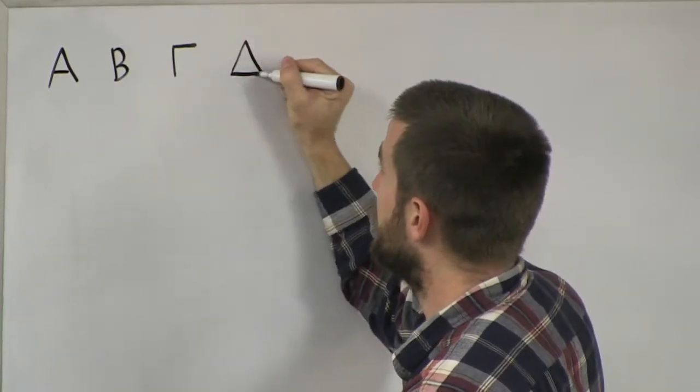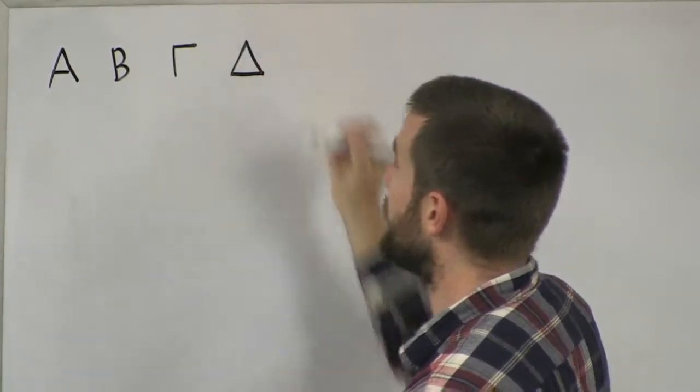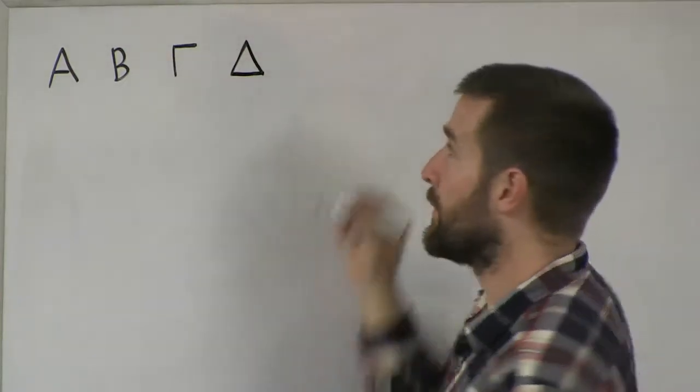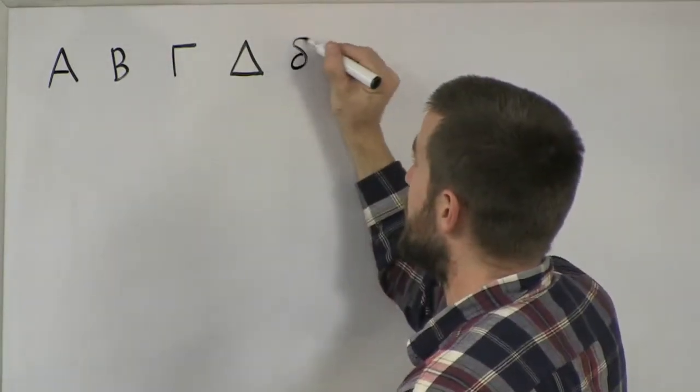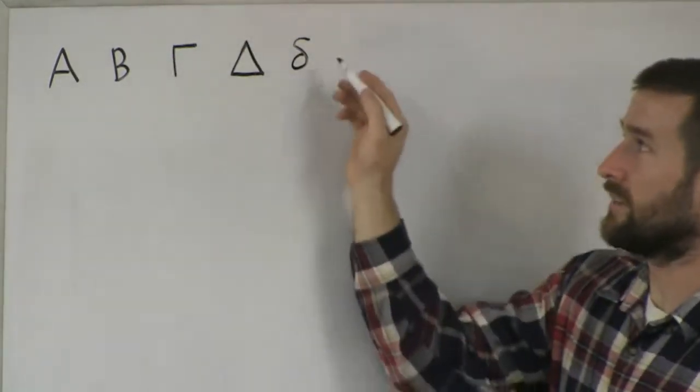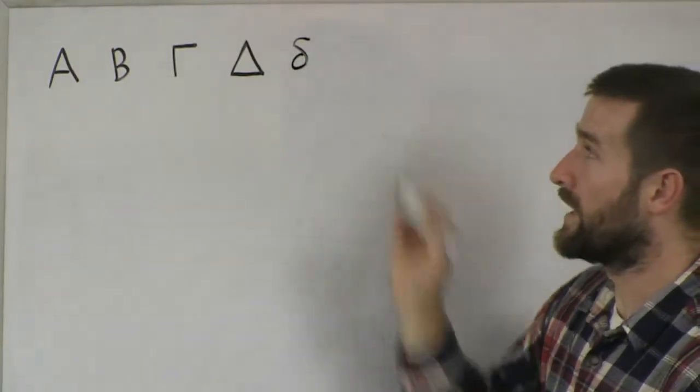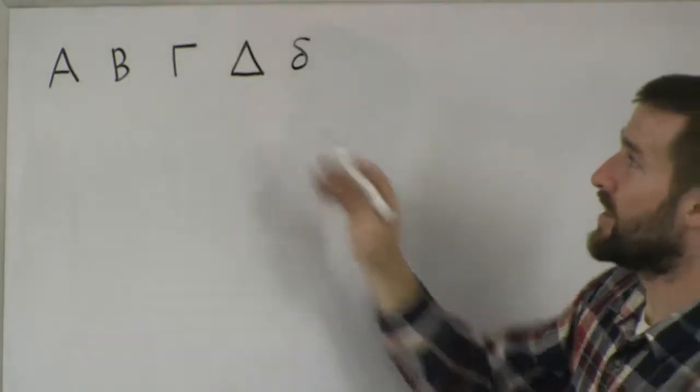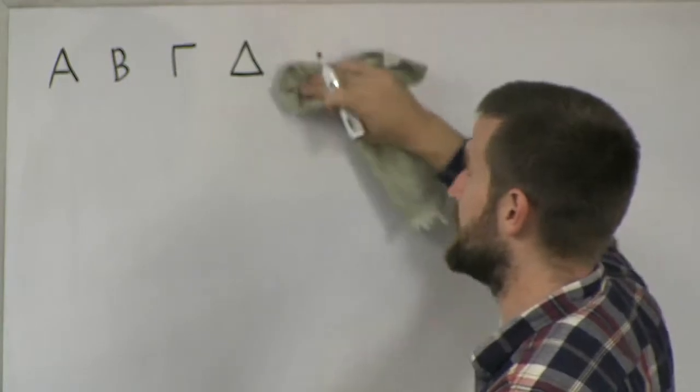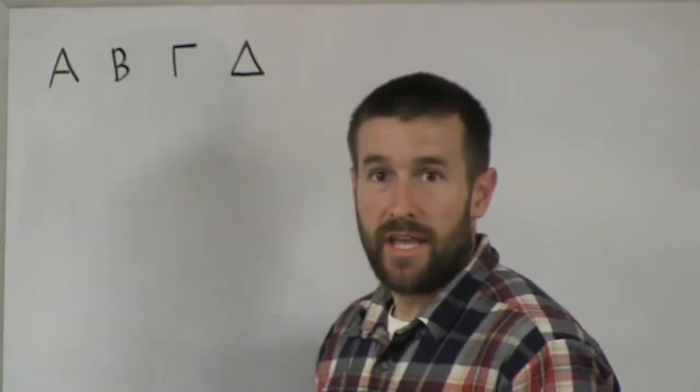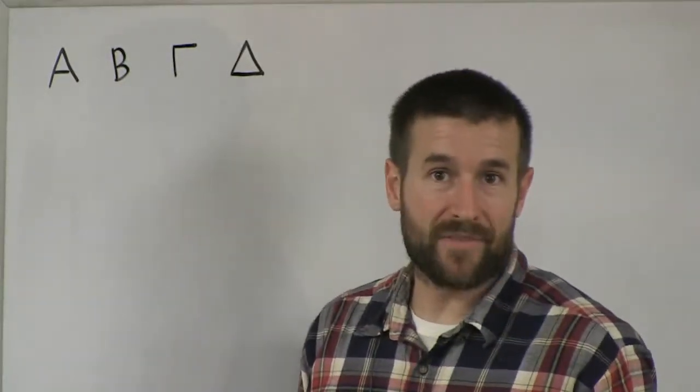The next one is Delta. Now, Delta is another one that's very different from its lowercase form because if you remember, the lowercase Delta is the one that sort of looks like a little round bomb with a wick coming out of it. That's our uppercase Delta right there. It just looks like a triangle. And you probably remember that from math or science class.